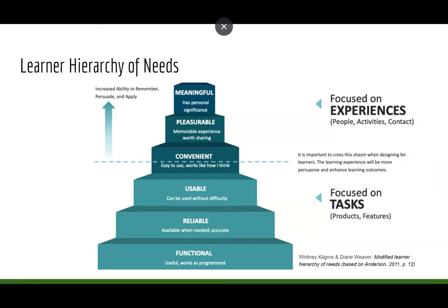When we think of course delivery and course design in higher education, I thought that this learner hierarchy of needs was kind of interesting. We obviously need functional, reliable, and usable courses. But convenience makes it a little bit easier for students and helps them to succeed. And then we're working towards pleasurable and meaningful. So we've got these high-level needs at the top, and that's what we are looking to design and deliver for our students.